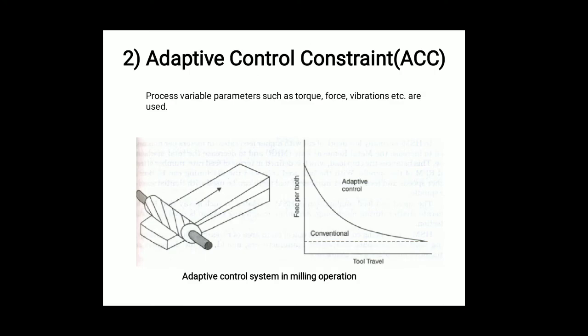The second type is Adaptive Control Constraint (ACC). In this type, process variable parameters such as torque, force, and vibration are used. Looking at the image, there is a roller traveling through sheets, and a graph shows tool travel versus feed per tooth. In this form of adaptive control, constraints are placed on the measured process variables. The system measures parameters such as cutting forces, torque, spindle motor power and current, tool wear, tool deflection, cutting temperature, and vibration using sensors and transducers.